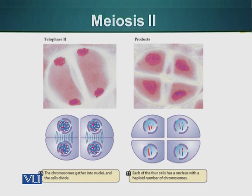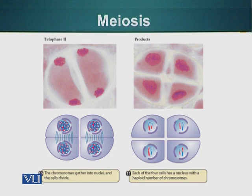Additionally, in meiosis 1, the pairing of homologous chromosomes is random. So for example, if we have 10 different chromosomes — 10 pairs of chromosomes, 10 chromosomes coming from the father and 10 from the mother — paternal chromosome 1 can go with the maternal chromosome 2 or the paternal chromosome 2. This is all independent and is referred to as independent assortment.